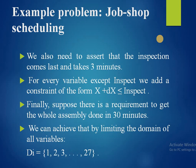We also assert that inspection comes last and takes 3 minutes, so for every variable except inspect, we add a constraint: x + dx ≤ inspect. Finally, if there is a requirement to complete the whole assembly in 30 minutes, we limit the domain of all variables: Di = {1, 2, 3, ..., 27}, leaving the remaining 3 minutes for inspection.